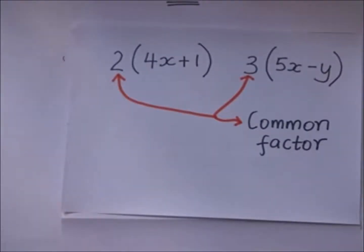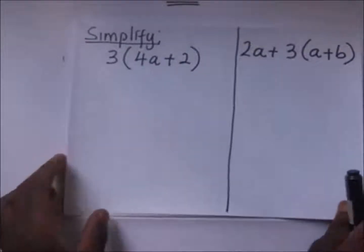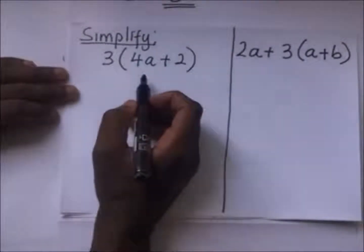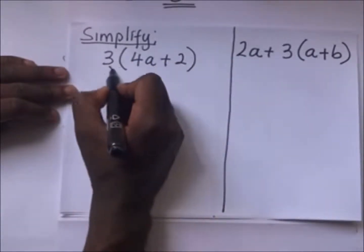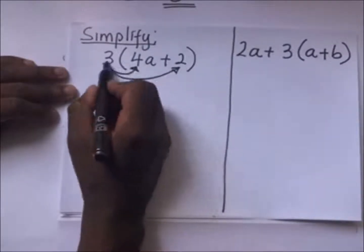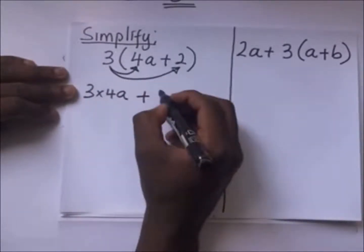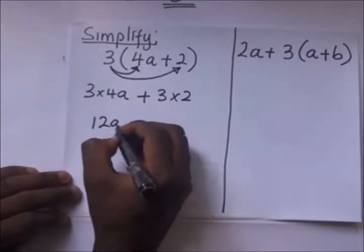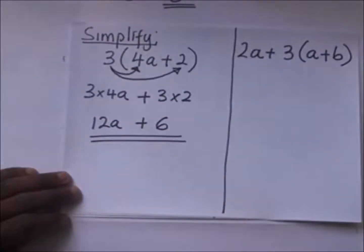In our first example, we are required to simplify 3 into (4a + 2). Simplifying this means opening the brackets — we get the number outside and multiply it by everything inside. So it's going to be 3 times 4a plus 3 times 2, giving us 12a plus 6. That's it — we've opened the brackets and simplified.